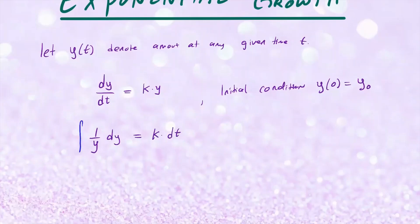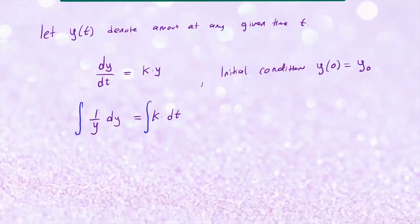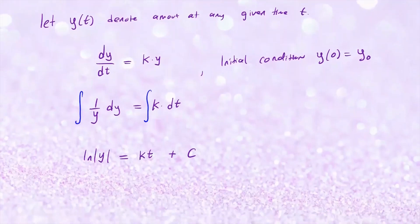Now we can integrate both sides with respect to their variables. On the left side, integrating 1/y gives ln of the absolute value of y, and on the right-hand side we get k times t plus the integration constant c. Now let's isolate y. I'm going to exponentiate both sides, so you'll have the absolute value of y equal to e to the power kt plus c.